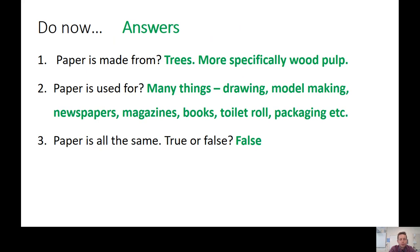And then number three: paper is all the same — true or false? Well, paper is not all the same. It's false. It's probably true in a way that it's made in a very similar process, but not all paper is the same. There are different types, different thicknesses, and that leads us nicely into today's lesson.